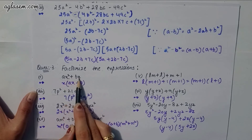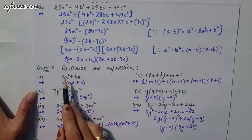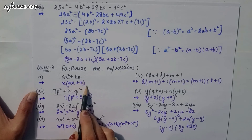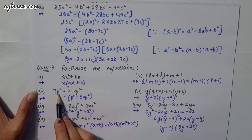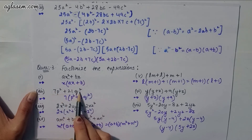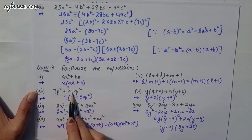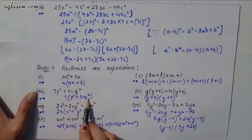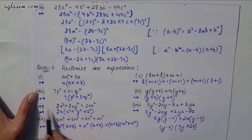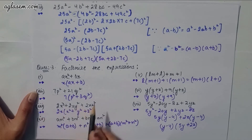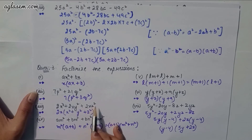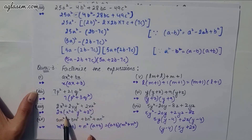Moving to the third question — factorize. Part (a): ax² + bx; take x as common: x(ax + b). Part (b): 7p² + 21q²; take 7 as common: 7(p² + 3q²). Part (c): 2x³ + 2xy² + 2xz²; take 2x as common: 2x(x² + y² + z²).